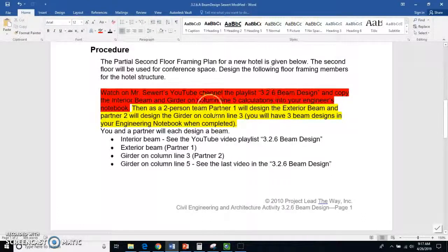That is for two beams. That is for an interior beam, that's the first one, and then there's also girder on column line 5 calculations that I'm going to show you in this video. I'm not going to go through the calculations, but I am going to point out a couple things for external beams and girders that are important.